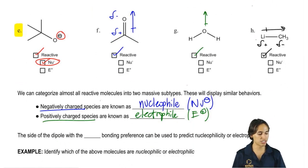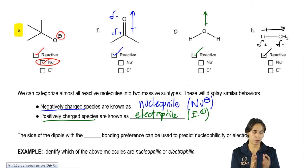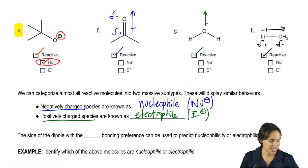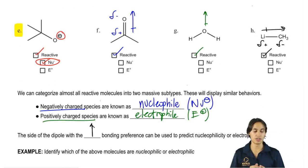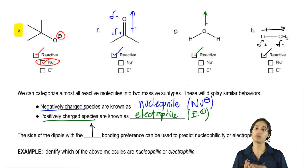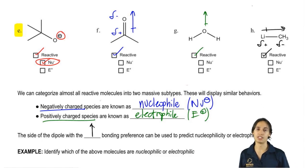And what that rule is: the side of the dipole that has the highest bonding preference can be used to predict the nucleophilicity or electrophilicity.